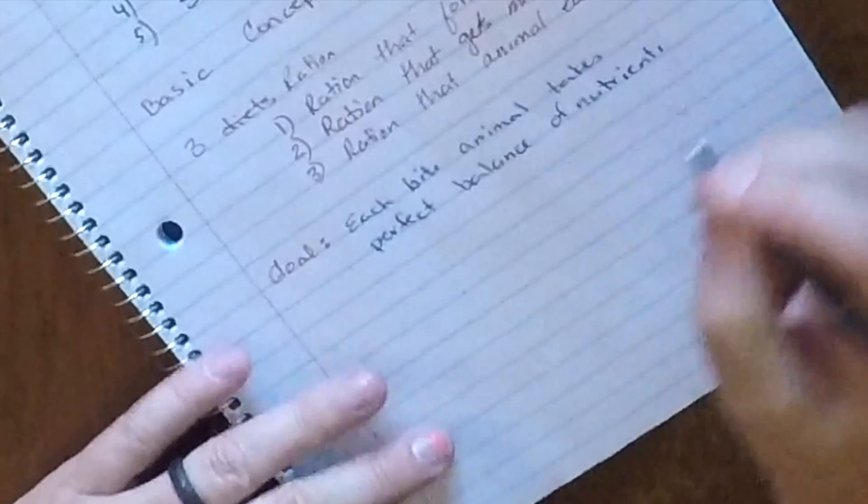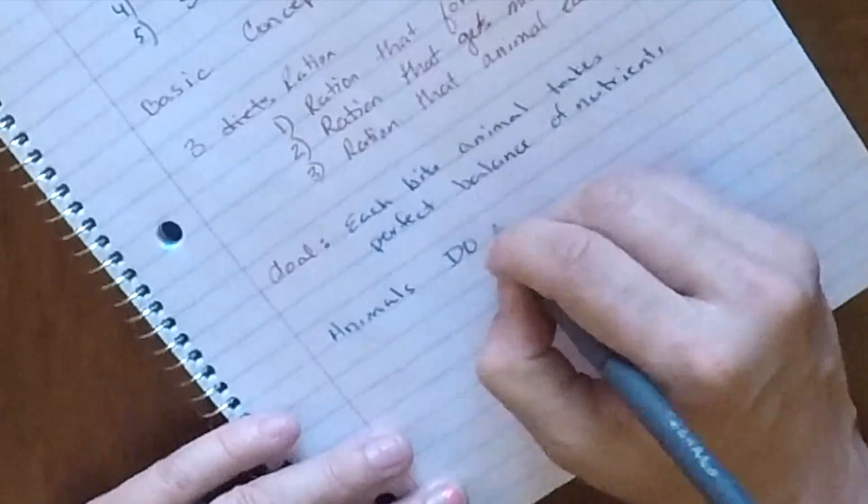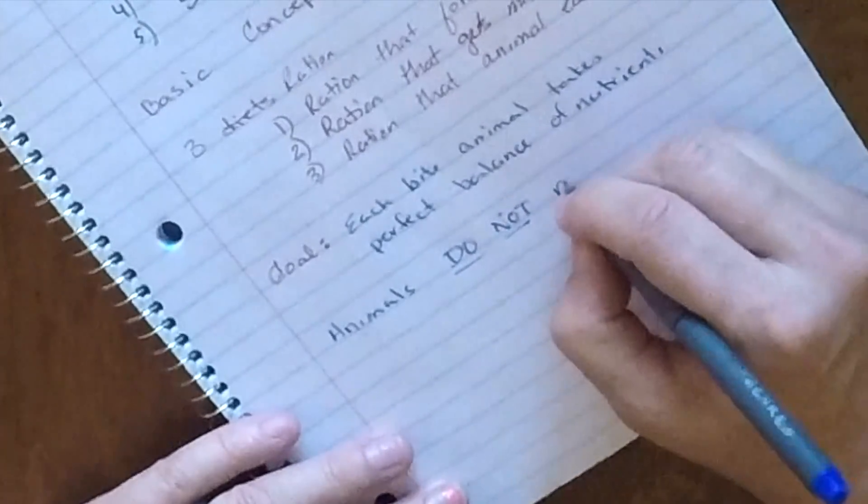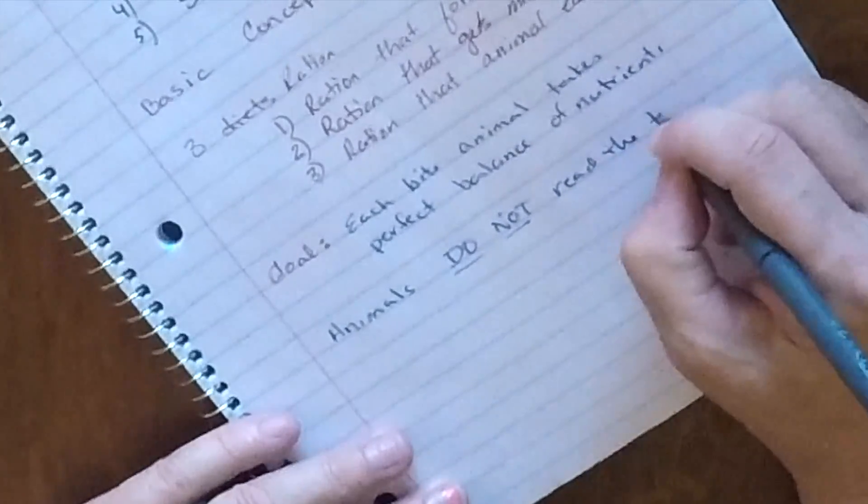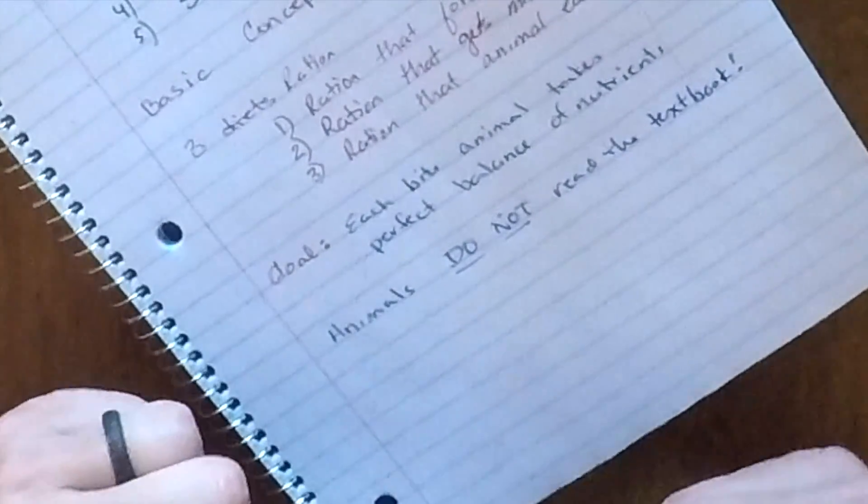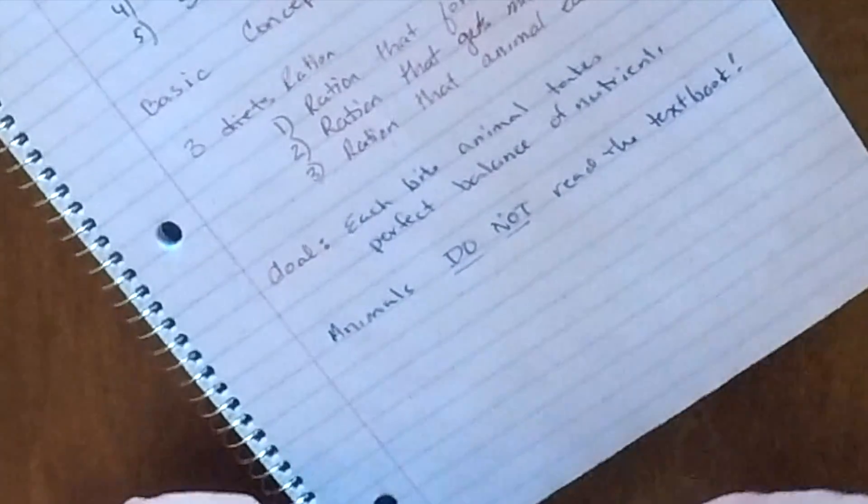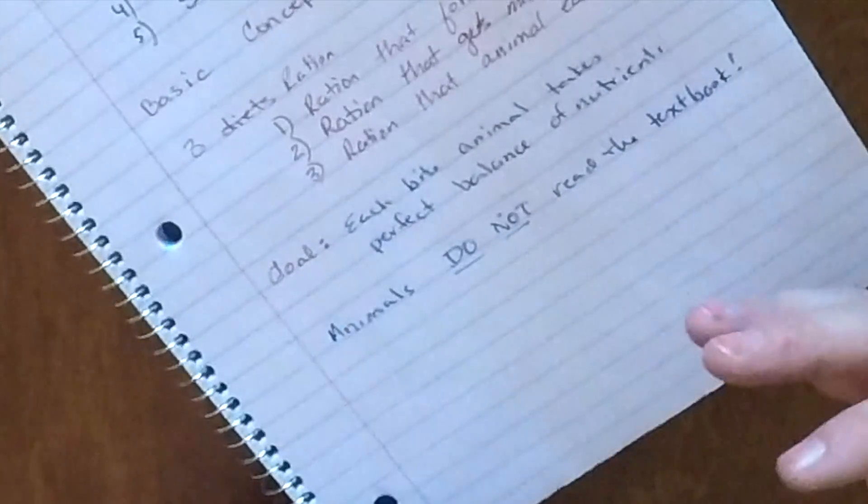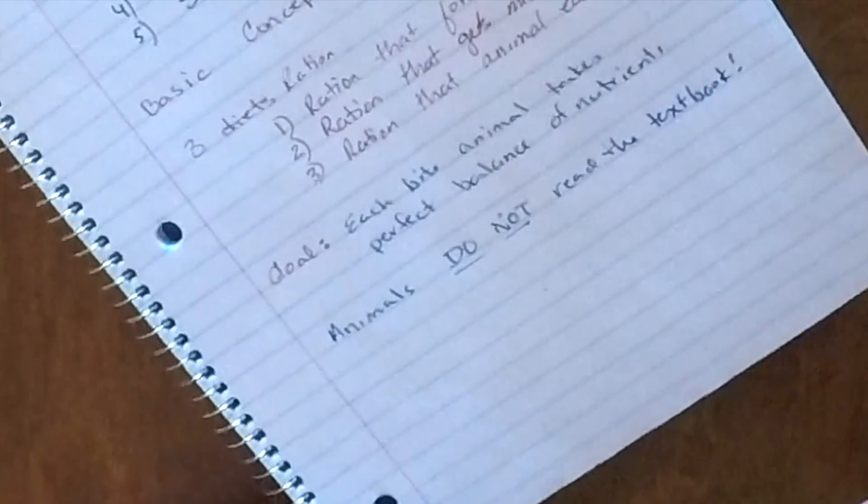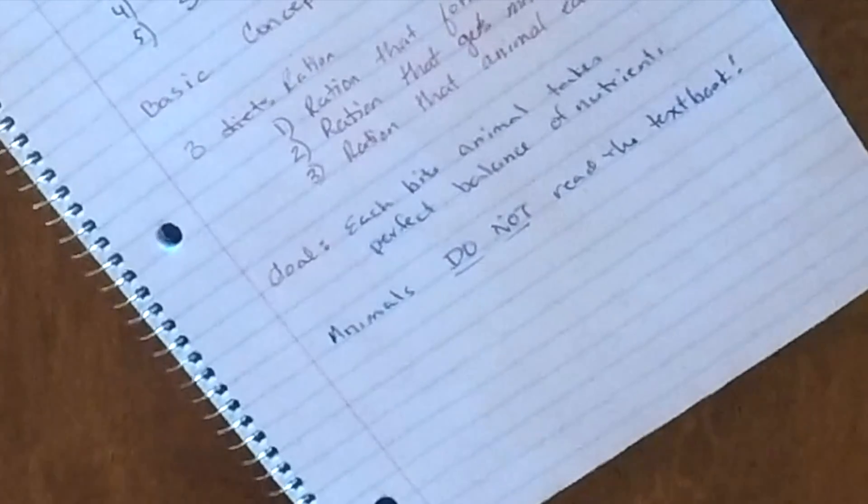However, unfortunately, animals do not, this is a very important concept, do not read the textbook. Meaning, they don't know what they're supposed to do. And every time I feed a group of animals, something different seems to pop up. It's always changing, always evolving. Animals have certain feeding behaviors and even like species to species feeding behaviors. But even within a species, an individual animal, one would like something, one doesn't. It's just like people, there's variety.